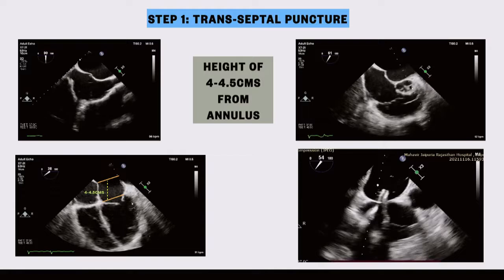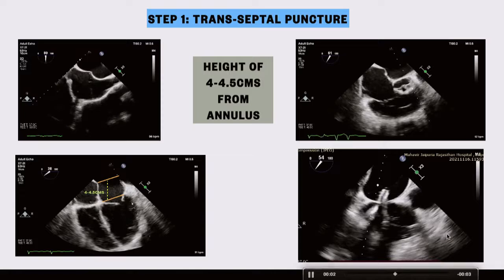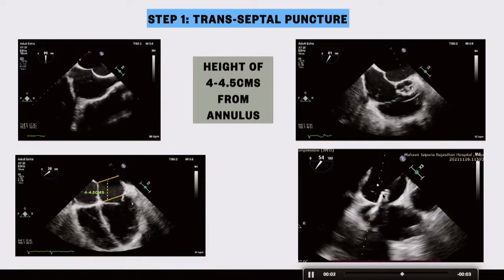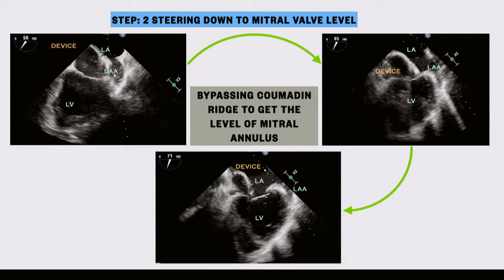When steering down to the mitral valve level, watch for the Coumadin ridge — the structure just above the left atrial appendage and the pulmonary vein. This must be done under vision to avoid damage to the left atrial appendage. After bypassing the Coumadin ridge, get to the level of the mitral annulus, then orient the clip arms at 90 degrees to the mitral commissure.